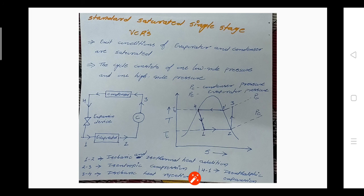That mixture entering the compressor is the drawback of the Carnot cycle, which has to be overcome. In the Carnot cycle, a mixture of vapor and liquid goes into the compressor, causing damage — that drawback must be avoided. In the standard VCR cycle, exit conditions of the evaporator and condenser are saturated. The cycle consists of a low pressure side and a high pressure side.